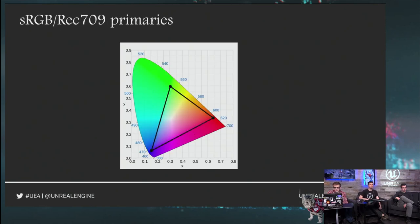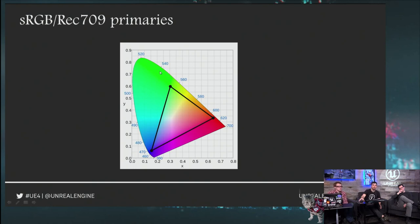Going back to the diagram: if you're not doing any math operations — multiplying, raising to a power — it's fine to have colors outside this range with negative channel values. The problem is once you start doing multiplications, like multiplying light color times diffuse color, it no longer works. You really have to have things in the right color space for any nonlinear operations. Adding colors is fine with negatives, but multiplying or raising to an exponent requires the correct color space.